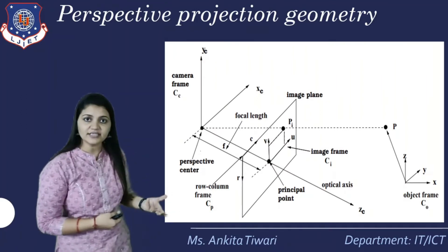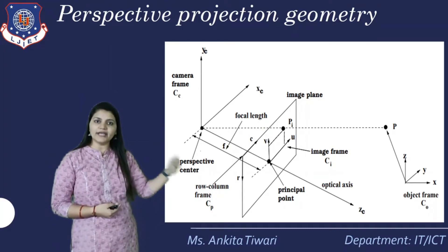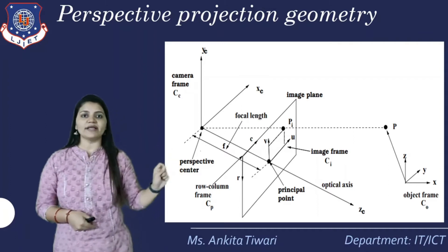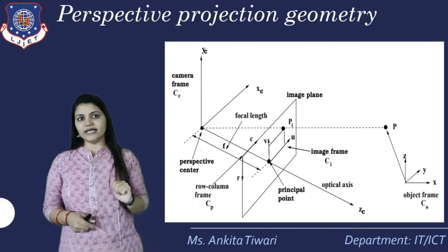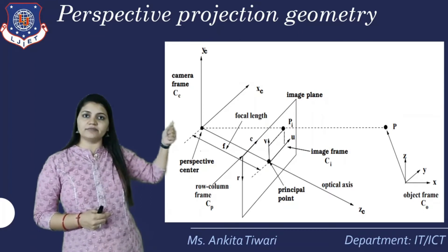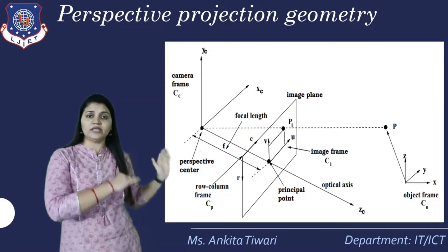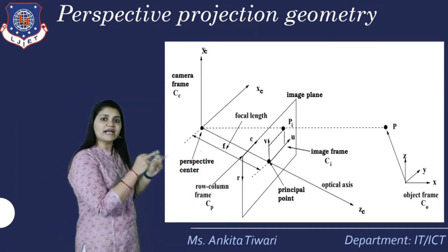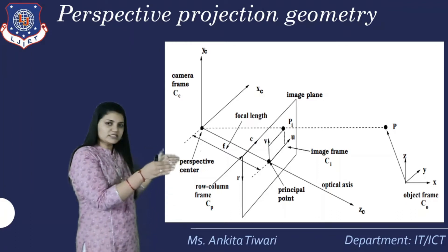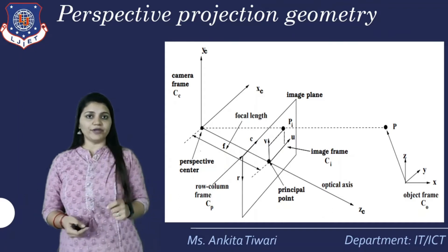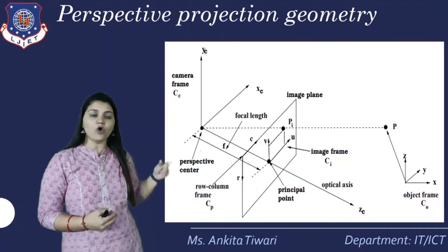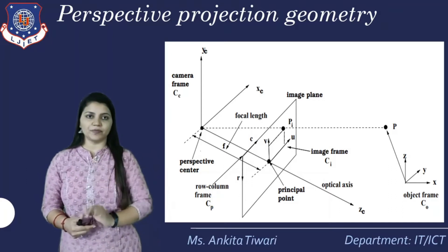For perspective projection geometry, we have a perspective center, a focal length F (the point between both images), a principal point in the image plane, and the image frame with U and V values. We also have the object frame — the world coordinate system X, Y, Z. The camera plane center CC is defined by the camera frame. The distance from the perspective center to the principal point (camera frame center) is the focal length, which is very important for understanding the distance between the two planes and how the object is captured.